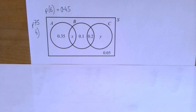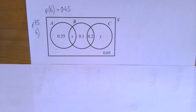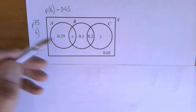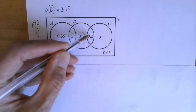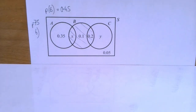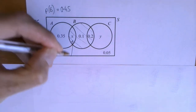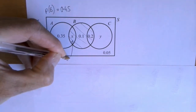I said I'd start today by looking at question six from yesterday. The probability of B is 0.45, and that means everything in that circle has to add up to 0.45, so x is 0.15.